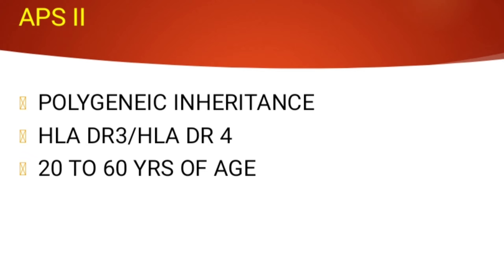Let's discuss another autoimmune disorder called APS type 2, which is Autoimmune Polyendocrine Syndrome type 2. This condition is a polygenic condition, meaning multiple generations will be affected. It has an HLA association with HLA DR3 and DR4.